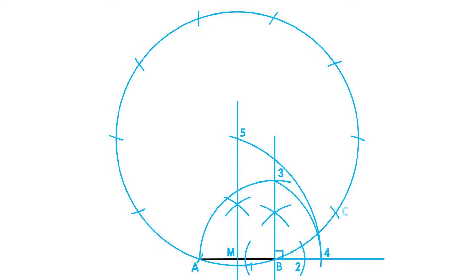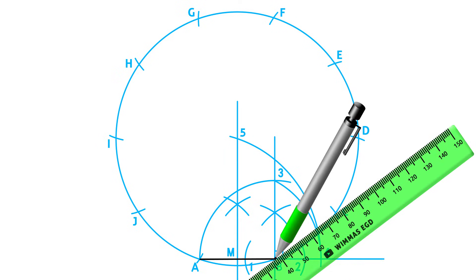We can label these intersecting points accordingly and join them together to complete our decagon.